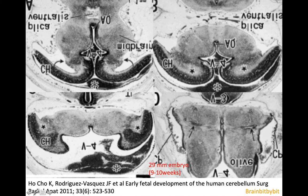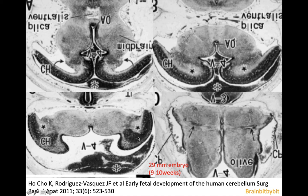The vermis is most likely formed from a cell mass that has a midbrain origin. This is a human embryo of 29 millimeters, gestational age 9 to 10 weeks. Going from cranial to caudal, you can see the cerebellar hemispheres forming from the sides, with a cell mass marked with an asterisk that is going to be the cerebellar vermis. The cerebellar hemispheres come in from lateral and the vermis comes from above.